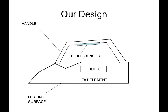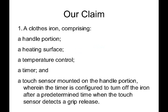Now that we know what our design is and how our product works, let's take a look at our claim. Our claim elements include a handle, a heating surface, a temperature control, a timer, and a touch sensor mounted to the handle portion. So our claim lines up pretty well with our design. But now let's see what our competition is doing.